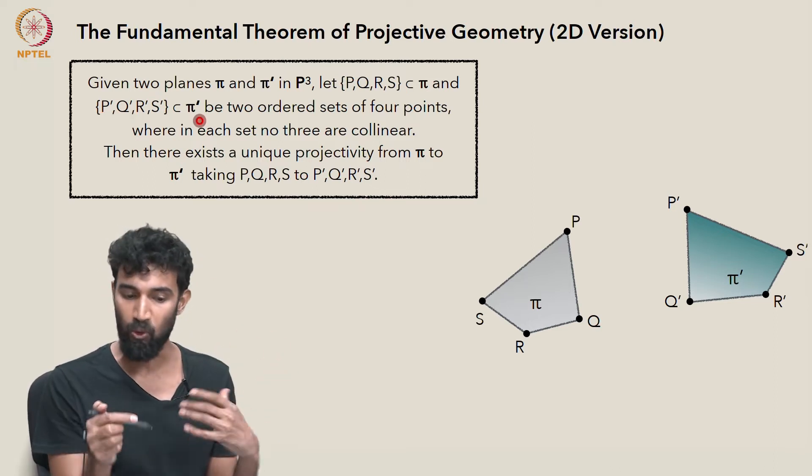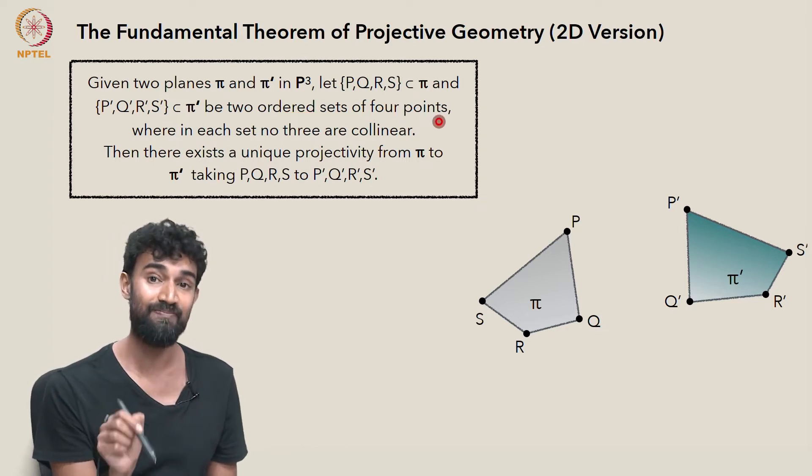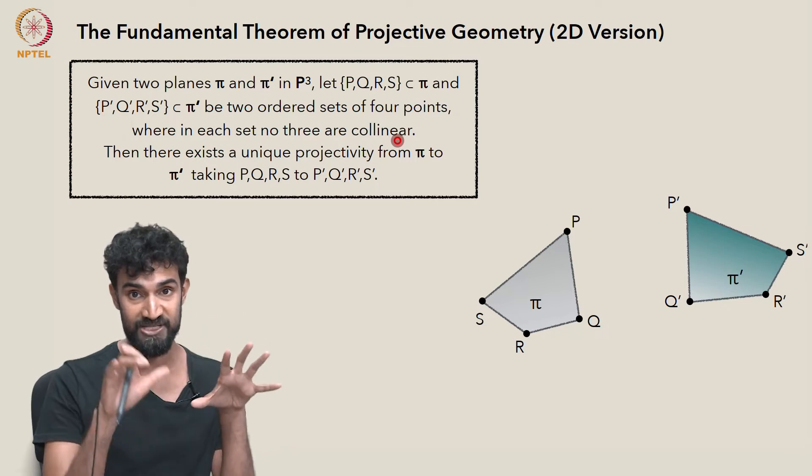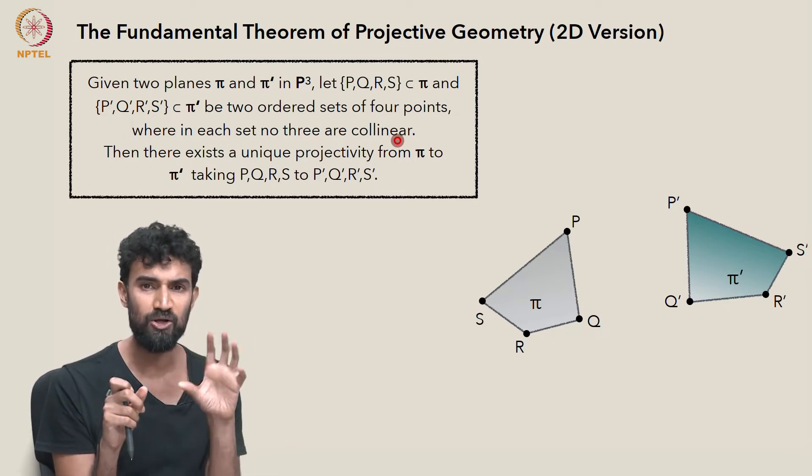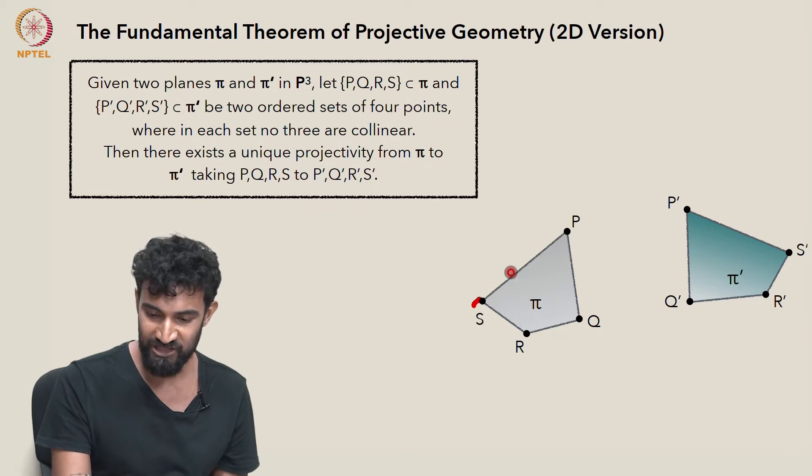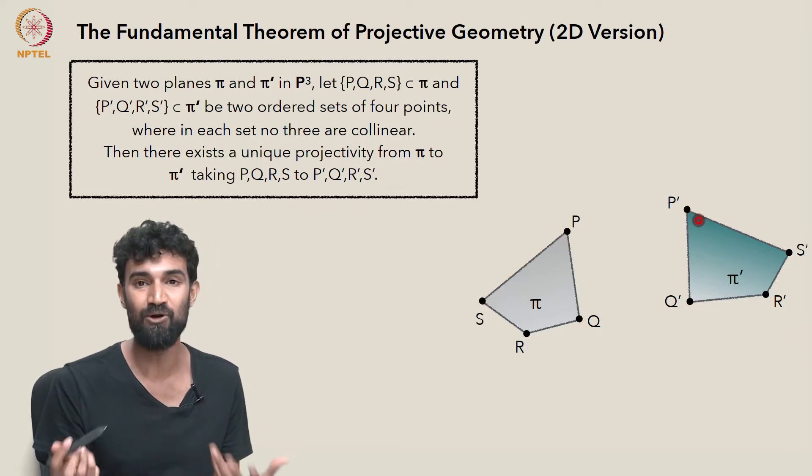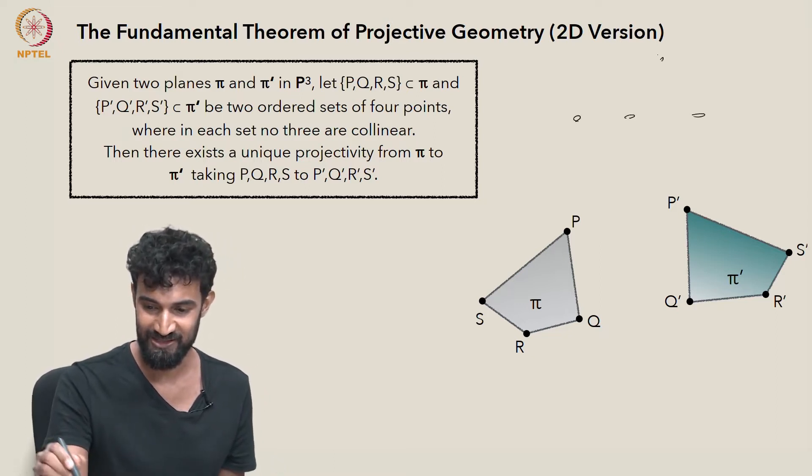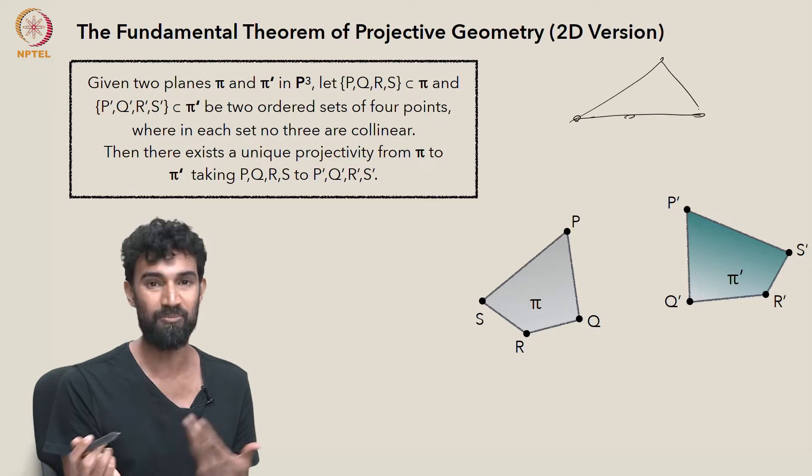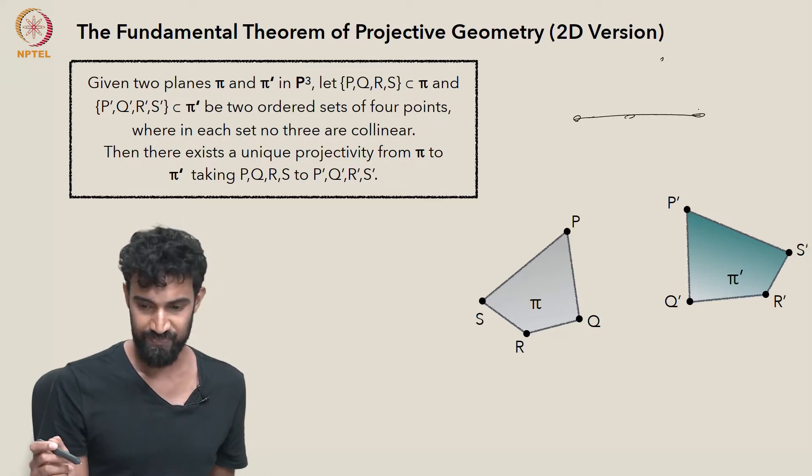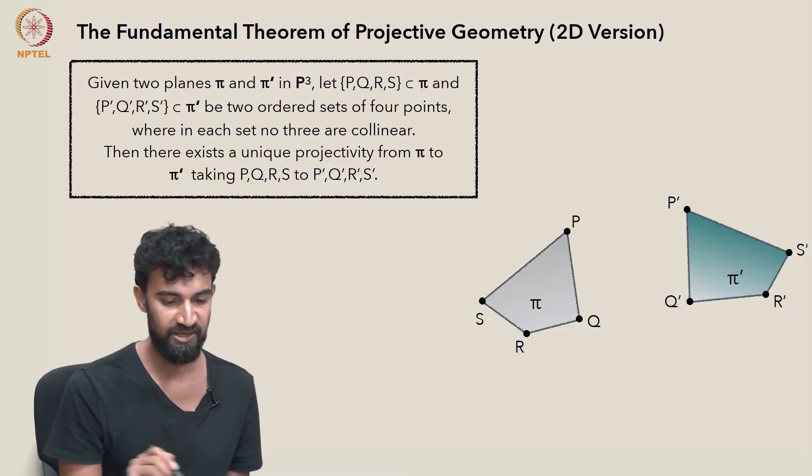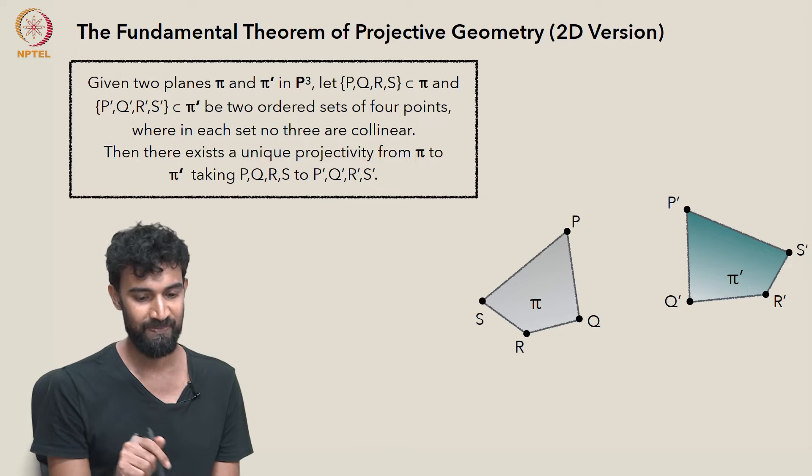These can be any two ordered sets of four points with the restriction that no three are collinear. In either set of four points, no three are collinear. They should really be able to form a quadrilateral. If three are collinear, that's no good. That's the only restriction. Otherwise, we have full freedom in choosing these four points in each of these two planes.